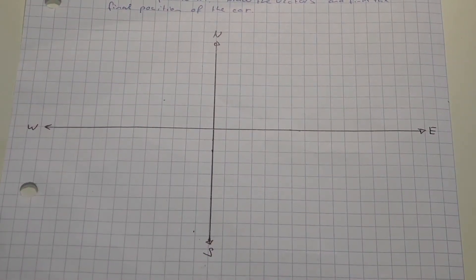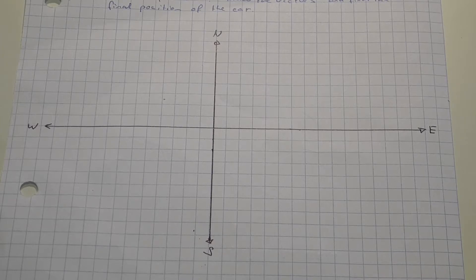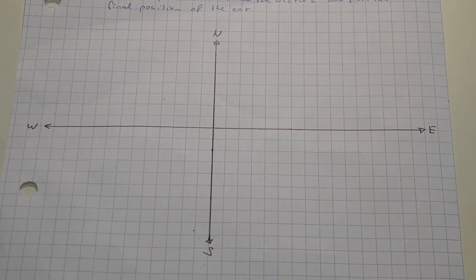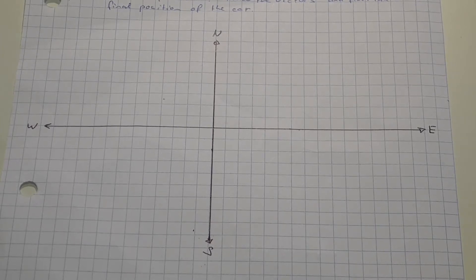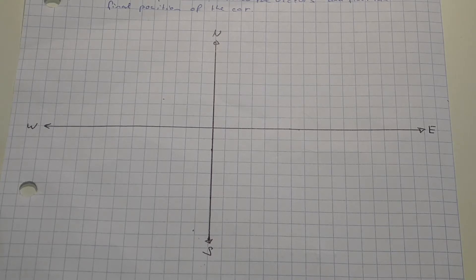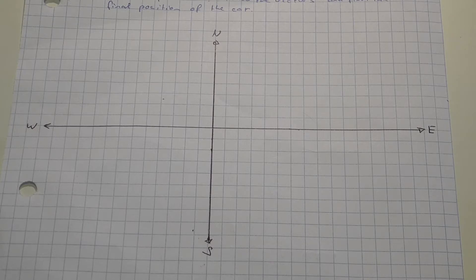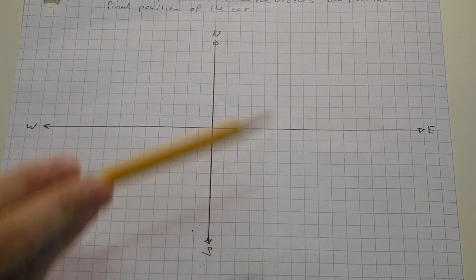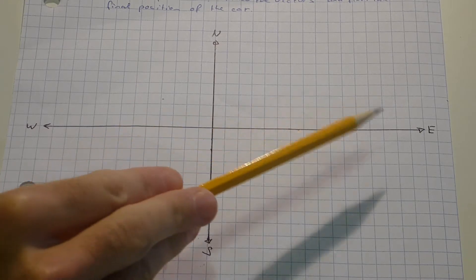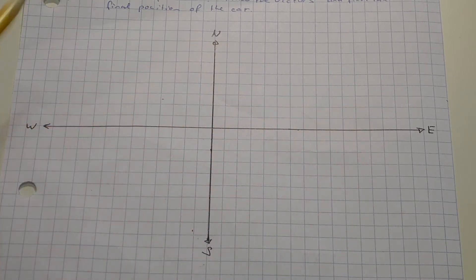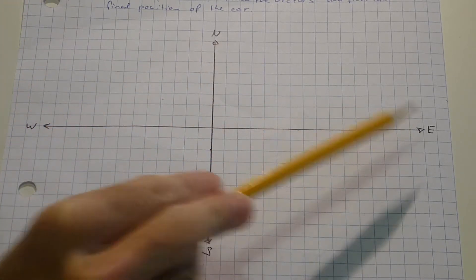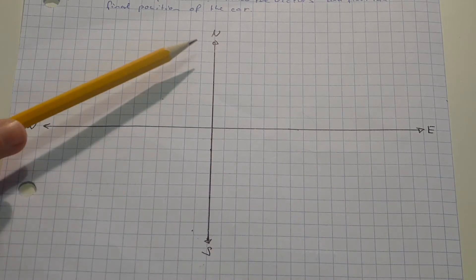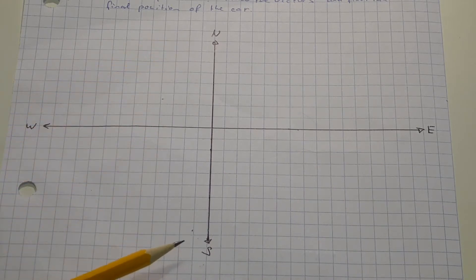In this question we have a car traveling 70 km east and then 40 degrees south of west for another 40 km, and we are told to draw the vectors and find the final position of the car. Unlike most of the other examples we have before, here we do not have x and y coordinates but we have east, west, north and south. But everything actually remains the same.